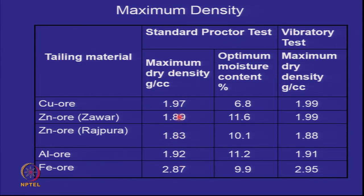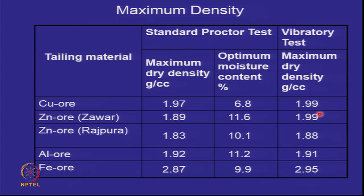Under vibratory compaction (relative density test), tailings also compact well. For example, vibratory maximum densities of 1.99 versus 1.97 from Proctor show vibration is beneficial. In most cases vibrations have a beneficial effect on compaction of tailings. At 80 percent relative density, φ' values are 30 to 38 degrees (typically 30–35). At low relative density (hydraulically or dry deposited), φ' values are lower: 25 to 33 degrees — similar to the range seen for ash.